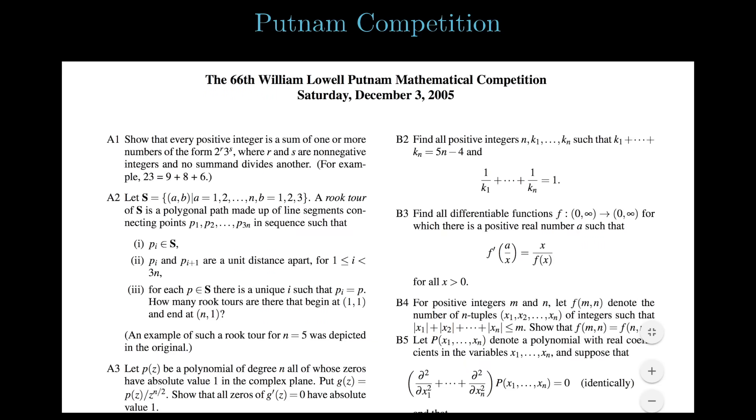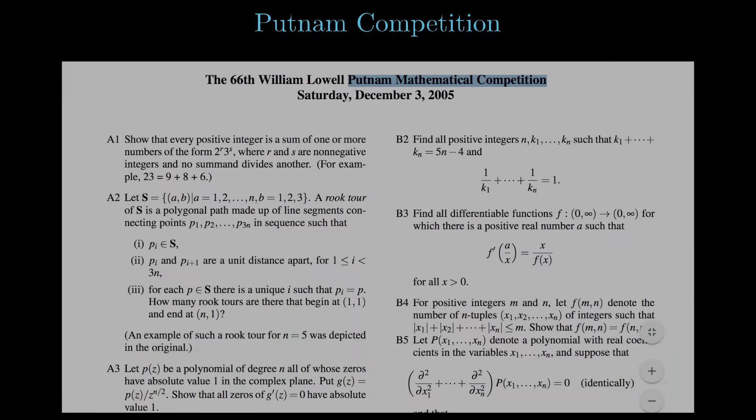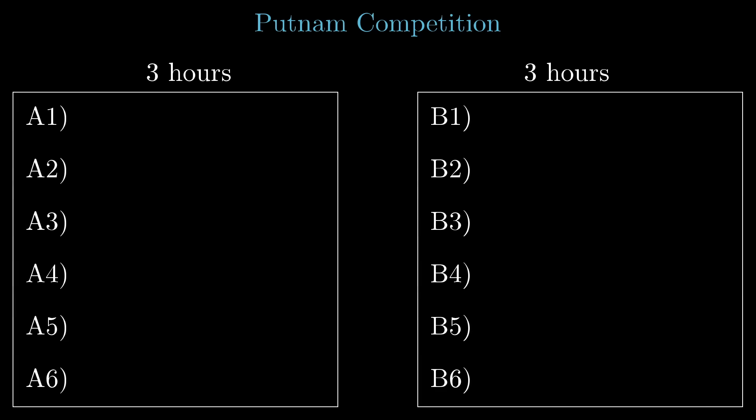Do you guys know about the Putnam? It's a math competition for undergraduate students. It's a six-hour long test that just has 12 questions broken up into two different three-hour sessions. And each one of those questions is scored 1 to 10, so the highest possible score would be 120.